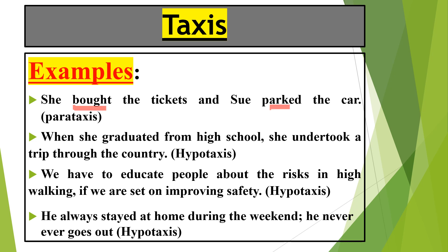We have used past indefinite tense, so we used the second form of verb. So here there are two finite verbs, which means there are two clauses. Secondly, how can we identify whether the clauses are independent or dependent? If they can give their own meanings independently, they are independent clauses; otherwise they can depend on another clause. Independent clauses are combined through coordinating conjunctions, or in the middle a semicolon may come.